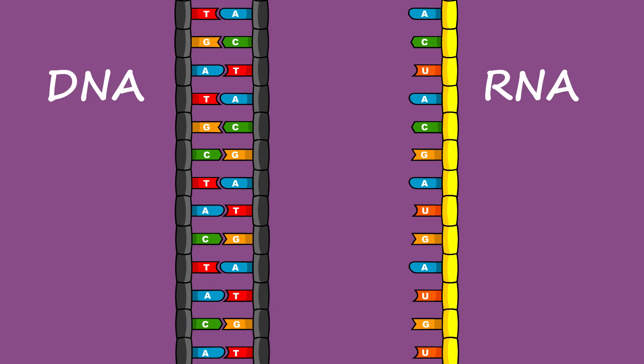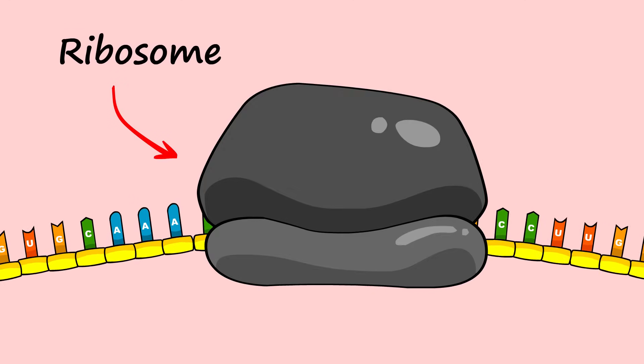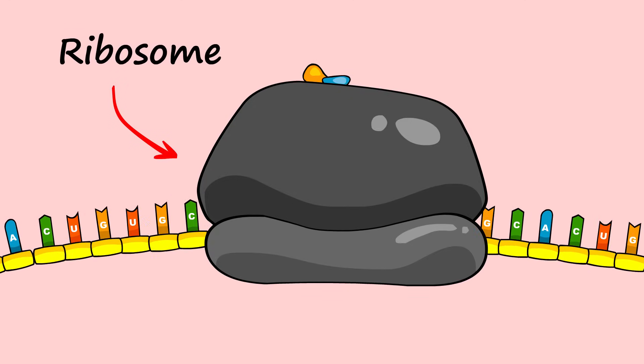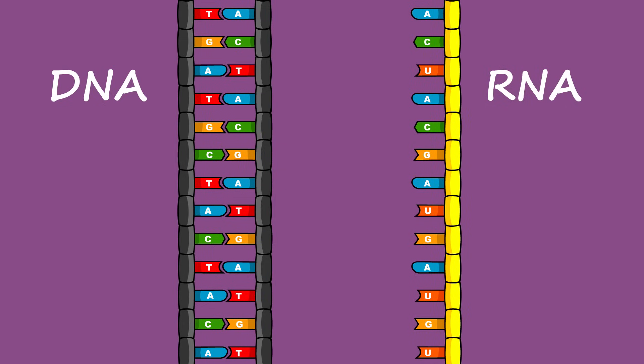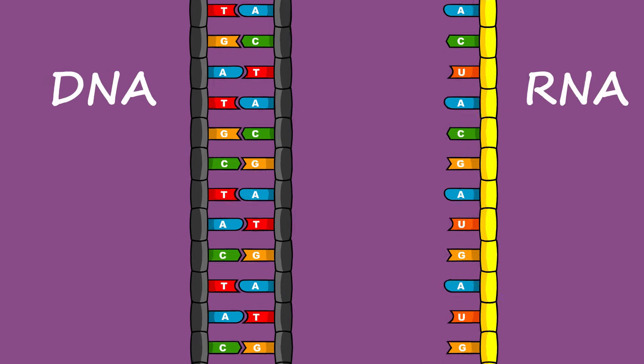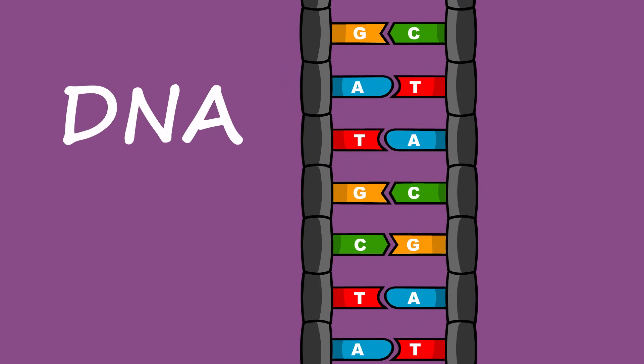This difference in structure has nothing directly to do with the innate properties of RNA and DNA. Chains of RNA are single-stranded because cells build RNA chains single-stranded. This allows RNA to easily interact with other molecules inside the cell. Our cells build DNA chains double-stranded which, among other things, enhances their stability.